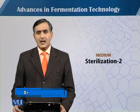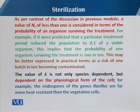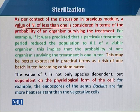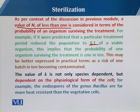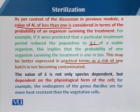In this module we will continue our discussion on sterilization kinetics. As we have seen in our previous module, the value of Nt, the survivors, is less than 1. If we draw the kinetics, we can achieve that the value of Nt is 0.1. So 0.1 is either the survivors or the viable organisms. This implies the probability of one organism surviving the treatment is 1 in 10. So this may be better expressed in practical terms as a risk of one batch in 10 becoming contaminated — if we run 10 different batches, one contamination event is possible.